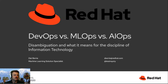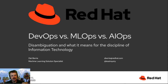Hello, my name is Zach Berry. I'm a machine learning solution specialist at Red Hat. Today I'll be discussing DevOps versus MLOps versus AIOps — a disambiguation — and what this means for the discipline of information technology.